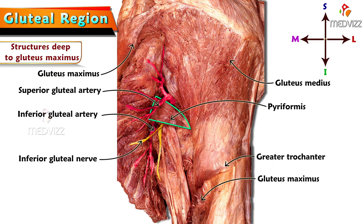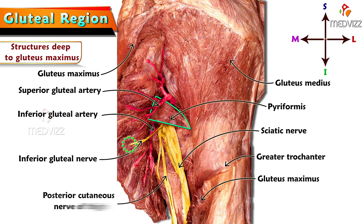The nerve seen associated with the inferior gluteal artery is the inferior gluteal nerve, which innervates the gluteus maximus muscle. The thick nerve observed below the piriformis is the sciatic nerve. The nerve present medial to the sciatic nerve is the posterior cutaneous nerve of thigh — the lateral and thickest one is the sciatic nerve, and medial to it is the posterior cutaneous nerve of thigh.